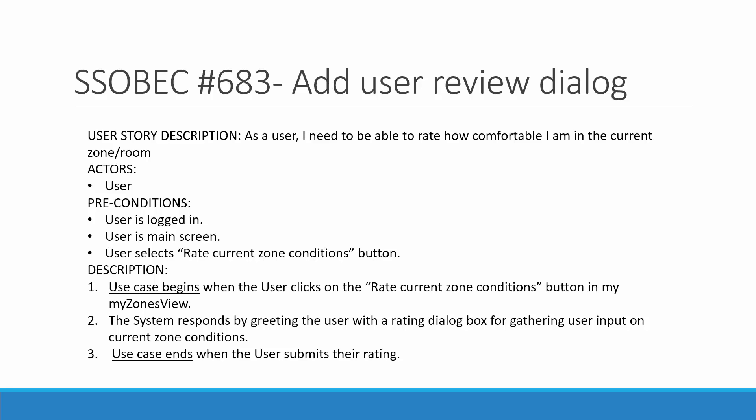It allowed the user to rate how comfortable they were in their current zone or room. They would need to be logged in, be on the main screen, and select the rate current room zone conditions button, which brought up a dialog box with a rating system from 1 to 5. Rating 1 means you need less temperature — you need to be colder, or you need less light. Rating higher means you need more temperature, more warmth, or more light.